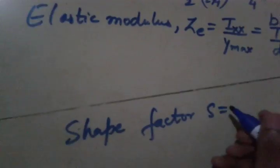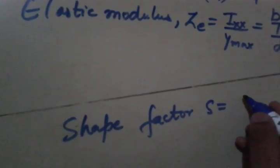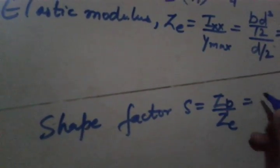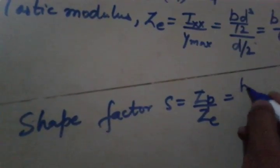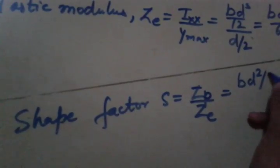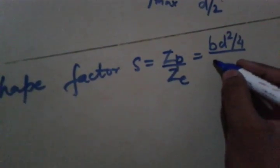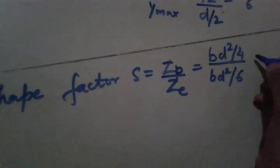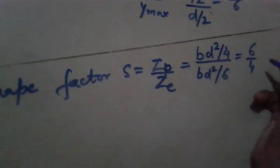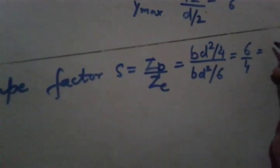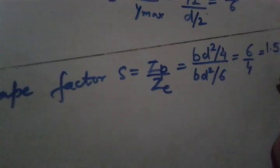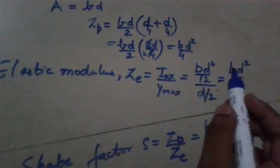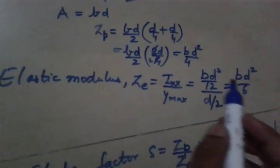Shape factor, that is S, will be equal to Zp divided by Ze, that is equal to BD square divided by 4 and here BD square divided by 6. So this will be 6 divided by 4 which is equal to 3 by 2 or 1.5. So we got shape factor as 1.5, elastic modulus as BD square divided by 6, and plastic modulus as BD square divided by 4.